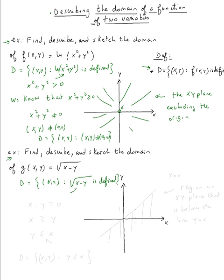When is the square root of a number defined? We want whatever is under the radical to be greater than or equal to zero. That means we want x to be greater than or equal to y, which means y ≤ x. So we have to graph the line y = x — when x is 0, y is 0; when x is 1, y is 1. This is the line y = x, and we want just the region where y ≤ x, in other words, the region below the line y = x.